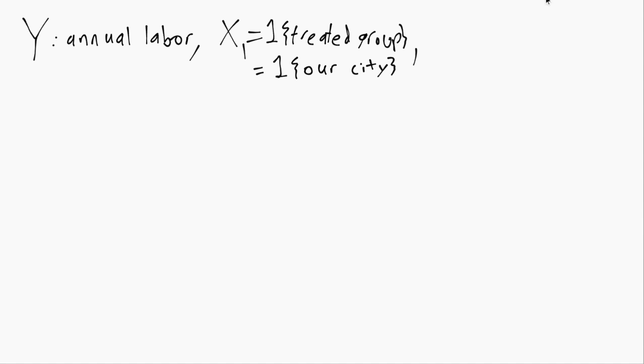And then there's also X2, which is a dummy variable equal to 1 if we are in the time period after whatever treatment or policy was implemented and equal to 0 if we are before.